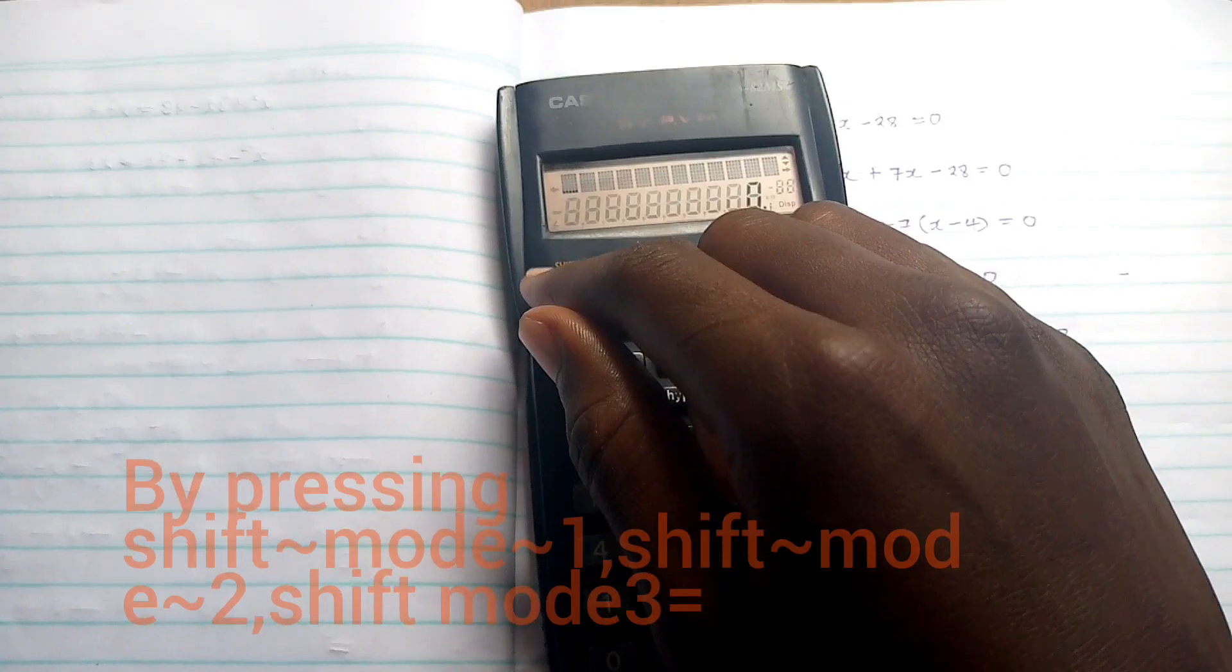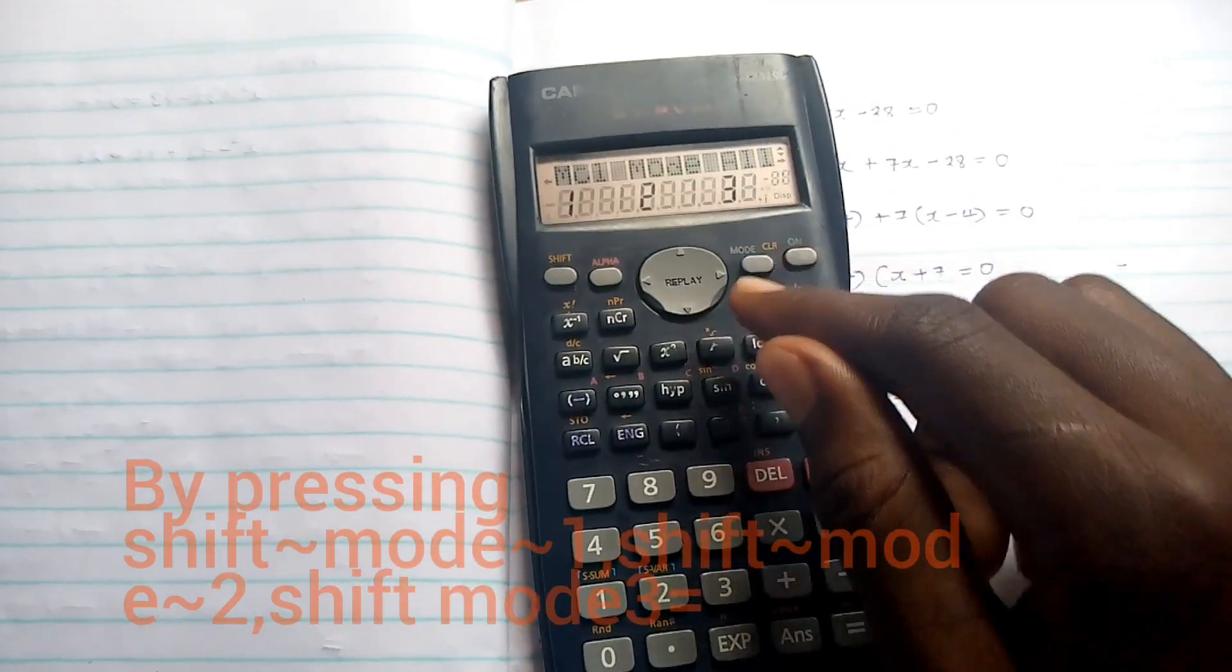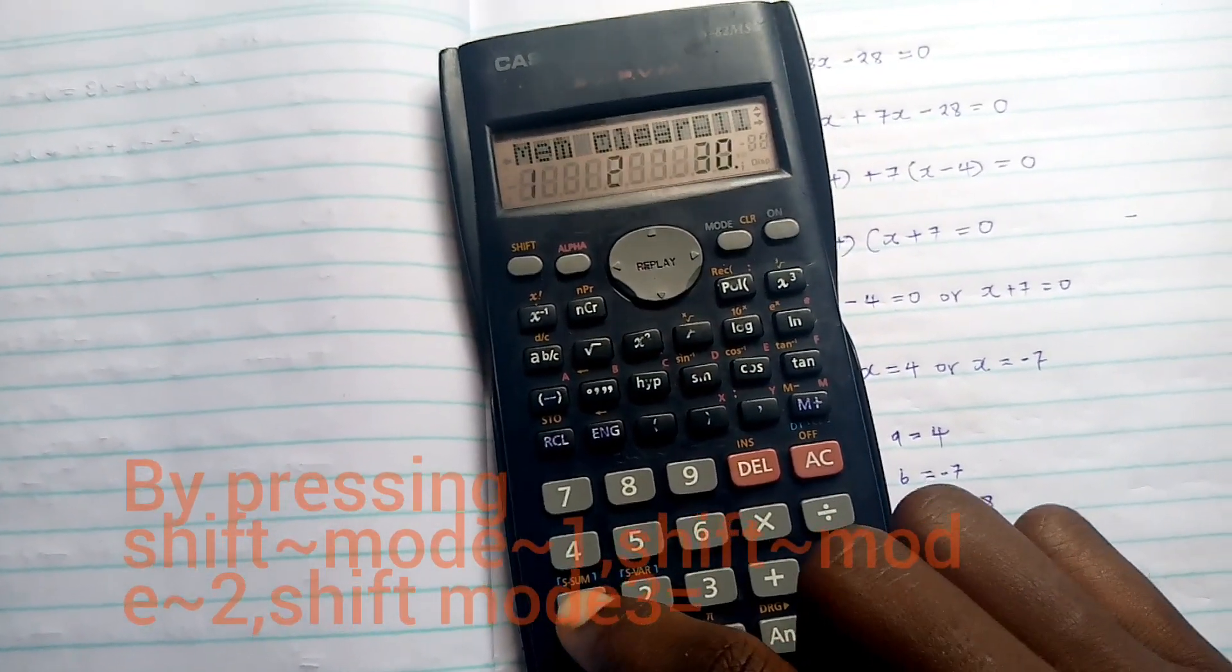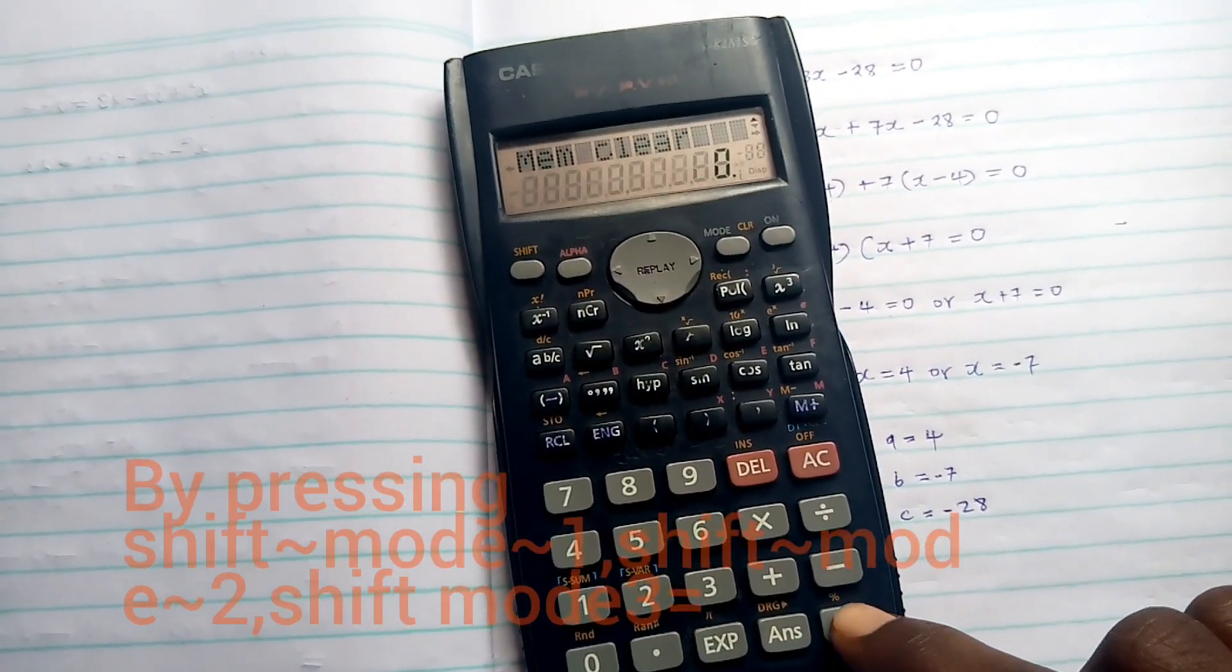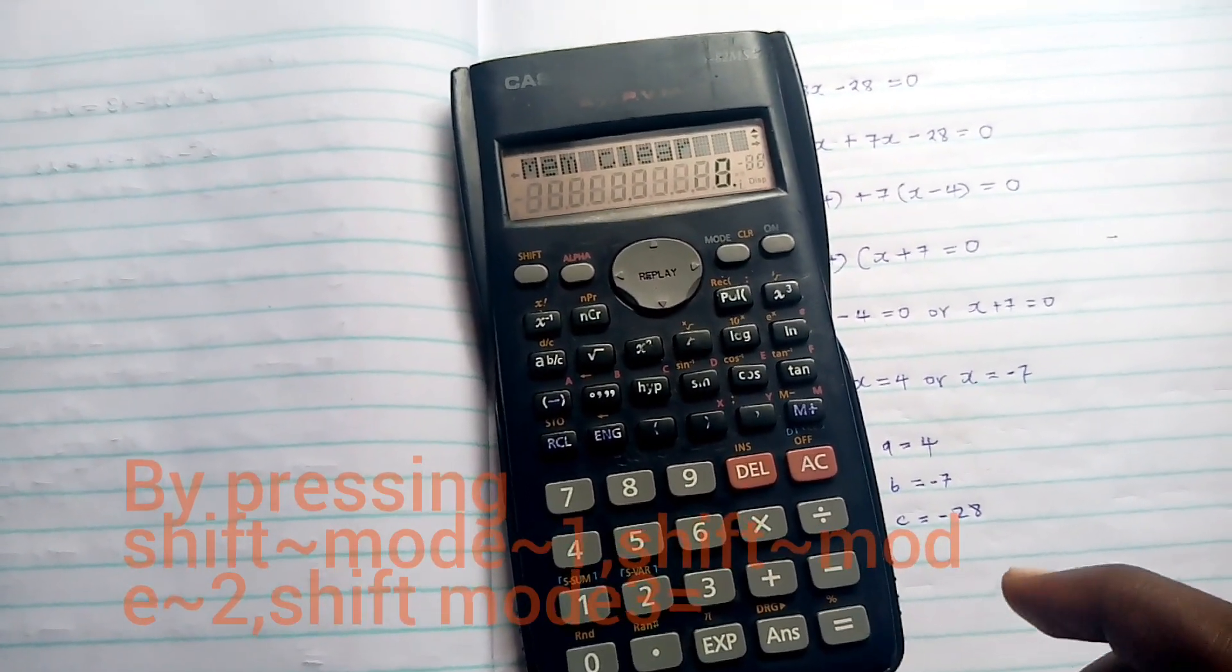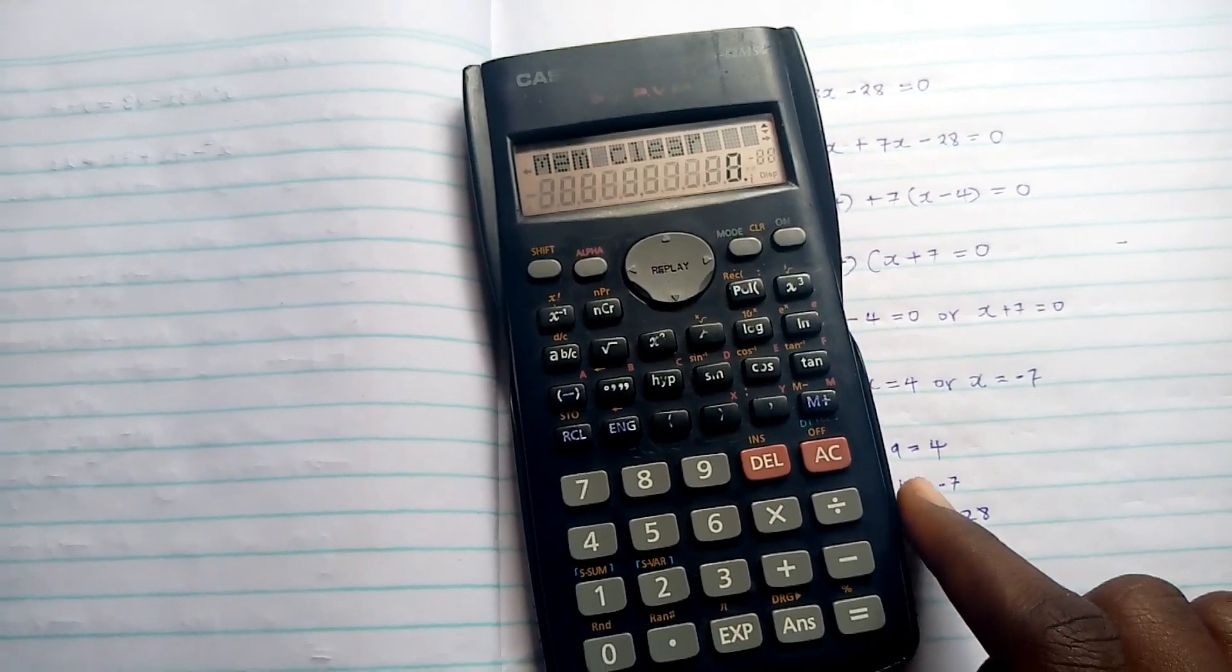Again, Shift, Mod, 1, then AC. Now, after restarting our calculator,